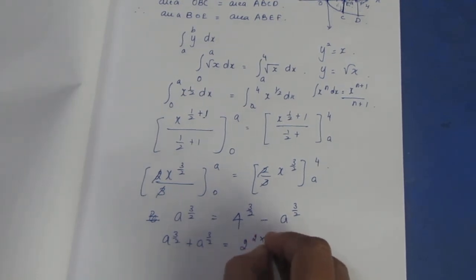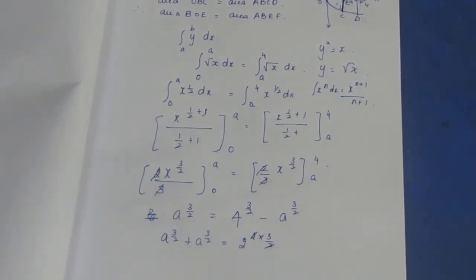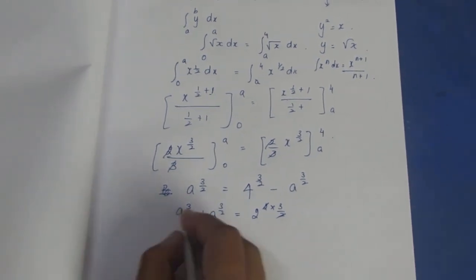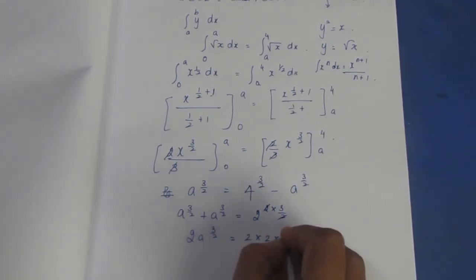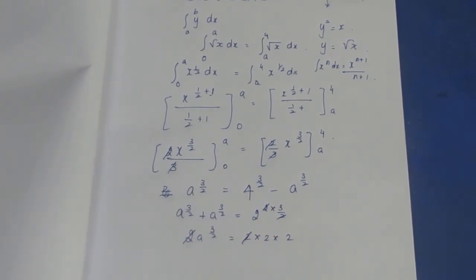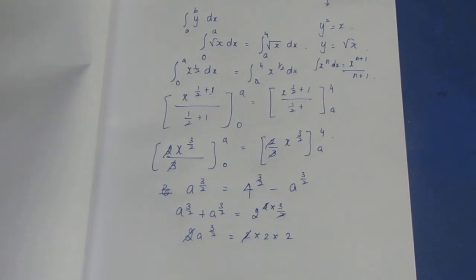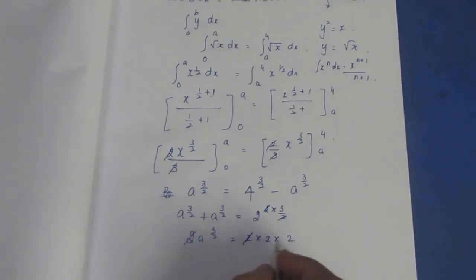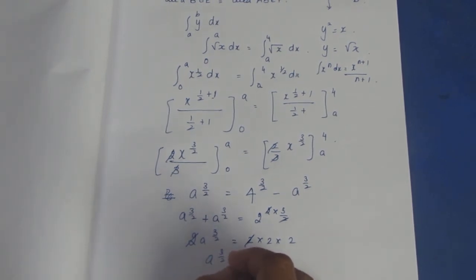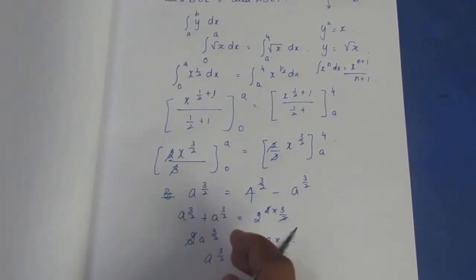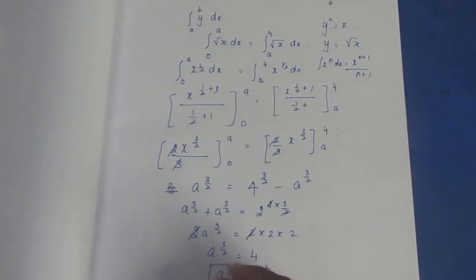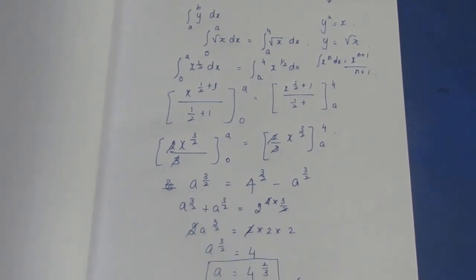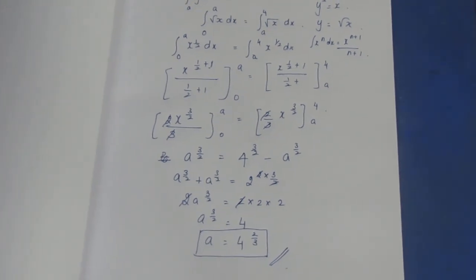So 2 times a power 3/2 equals 4 power 3/2. Now 4 power 3/2 equals 2 squared to the power 3/2, which is 2 cubed equals 8. Therefore 2 times a power 3/2 equals 8, so a power 3/2 equals 4. Thus a is equal to 4 power 2/3. That is the final value of a.